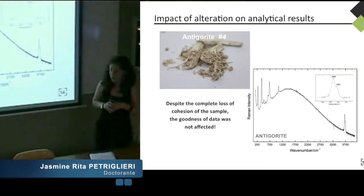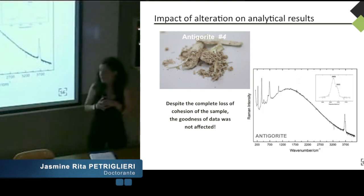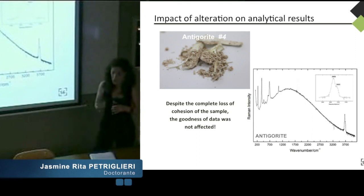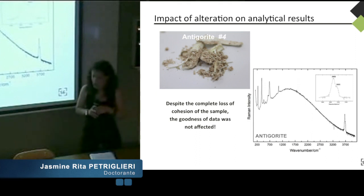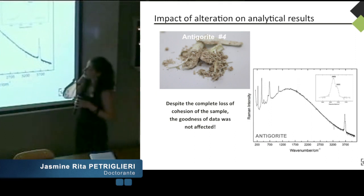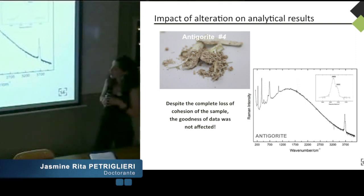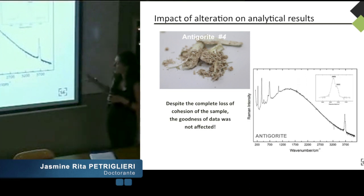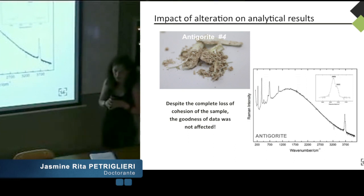Further analyses were realized on the most altered samples in order to evaluate the goodness of data compared to the alteration. As clearly evident in the picture, despite the complete loss of cohesion of the sample, the goodness of data was not affected. The portable Raman allowed to identify, in this case, an antigorite phase.